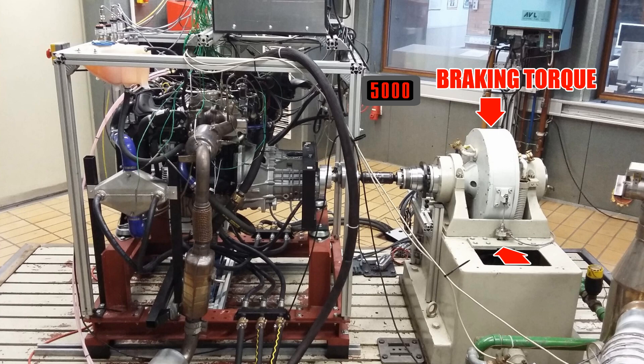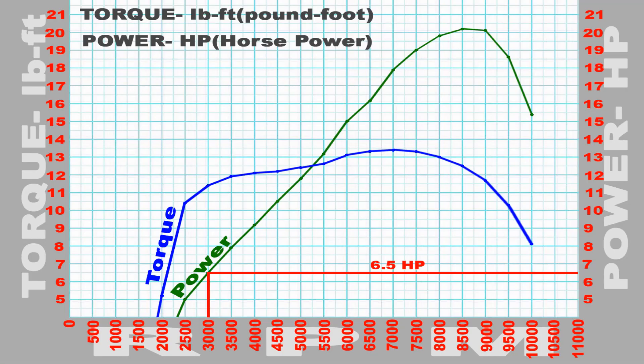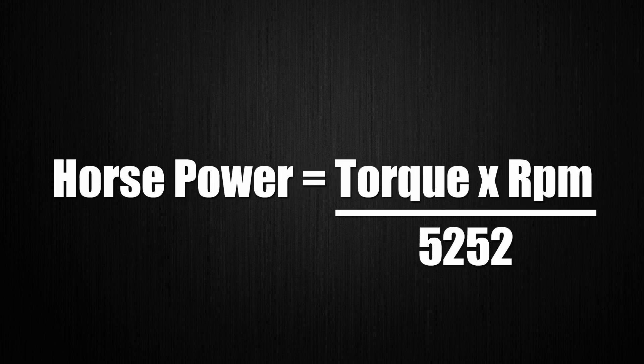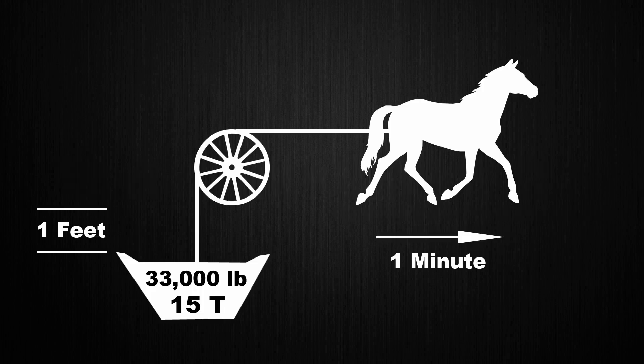The engine is tested across its RPM range from idling up to maximum RPM. The torque is measured and then multiplied by the RPM. The torque in pound-foot is divided by 5252 to calculate the horsepower.